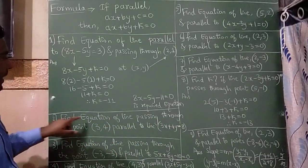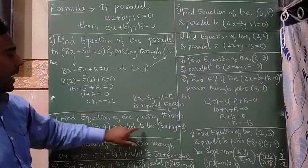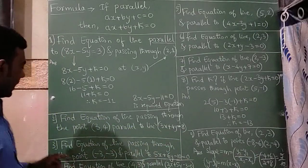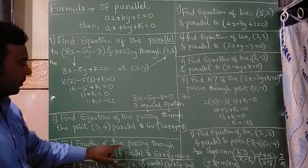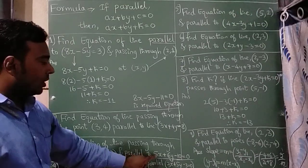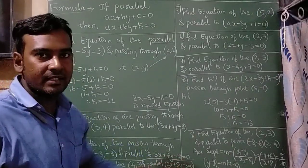Now the second question is find the equation of the line passing through the point 3 comma 4 and parallel to the line 3x plus 4y is equal to 8. And third question is find the equation of the line passing through the point minus 3 minus 3 and parallel to the line 5x plus 6y minus 10 is equal to 0.